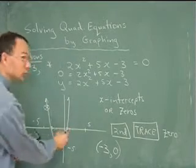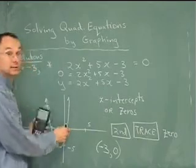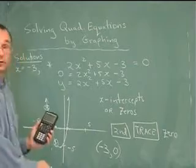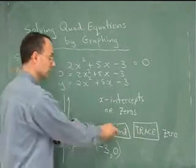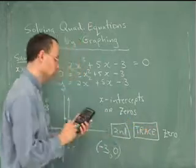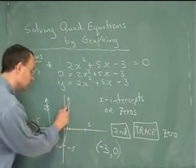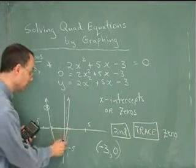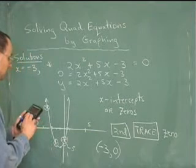And the other solution, I'm now going to repeat the process on the calculator to identify what this is. It looks like it's positive 1 half. But let's find out for sure. So I go second function, trace. I choose number 2, which is 0, and I position the cursor somewhere to the left side of where this 0 is. Somewhere down here would be perfect. Let's move my cursor over to there, and hit enter.